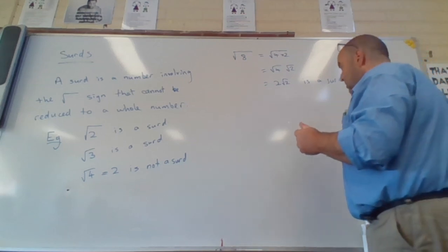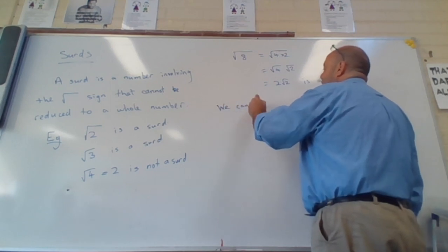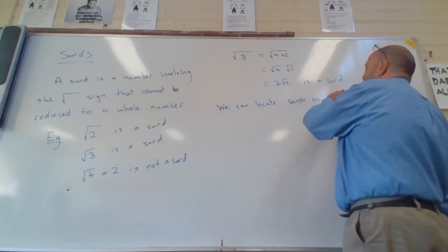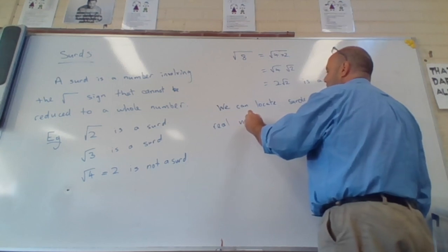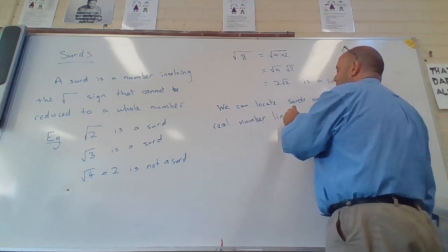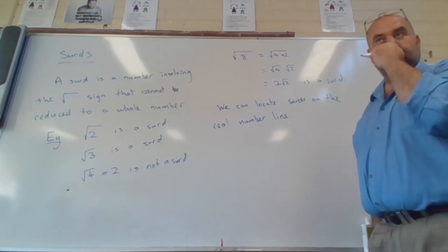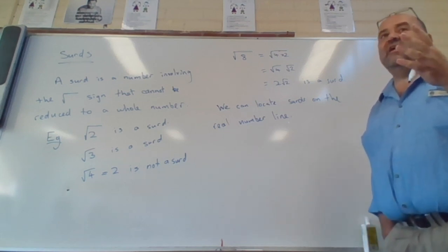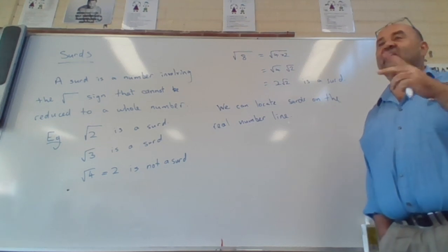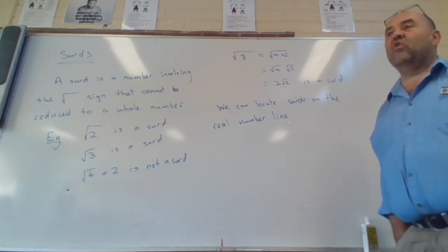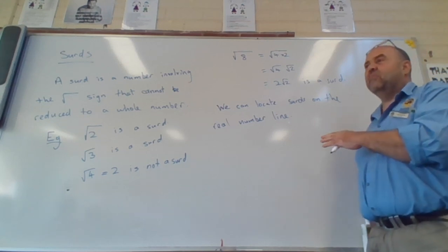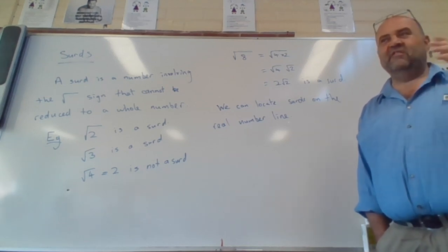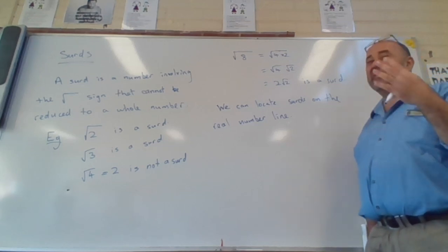We can locate surds on the real number line. Now you may have done this in year eight. It's painful to do it very accurately, and I'm guessing that if you're sitting there without a set of compasses, it's going to be very difficult. So I'll describe the process and put a diagram up on the board so you can see what that looks like. But you're not going to be asked to make this construction in an exam. It's enough that you see how it works.